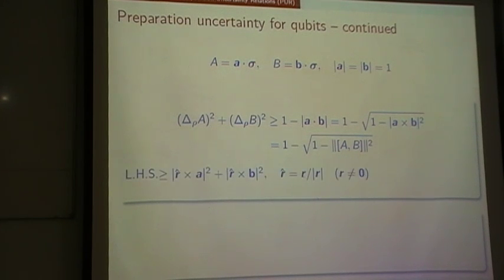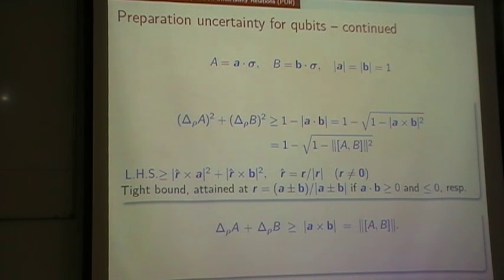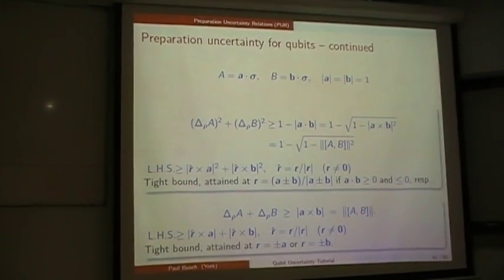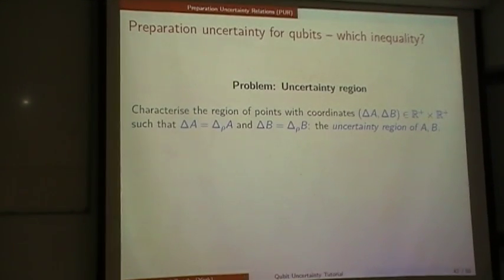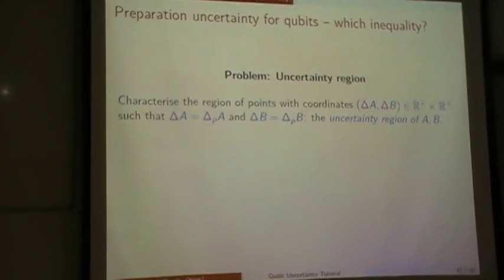You can work out where equality is reached by observing that this works optimally if we go to pure states, and then the tight bound is actually attained when the vector is a plus b, normalized. Or you could take the sum of the standard deviations and minimize that — again, the tight bound is attained at a different set of points. The real question is to determine the full uncertainty region, which is the region of points with coordinates delta A, delta B, where delta A is the standard deviation in a given state and delta B is the standard deviation in the same state.